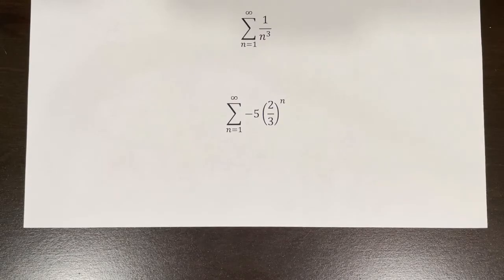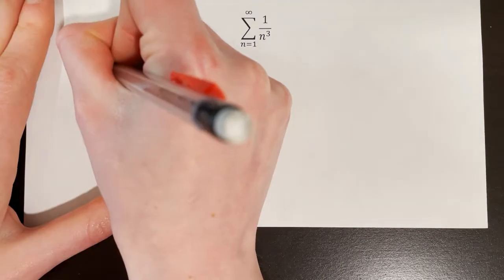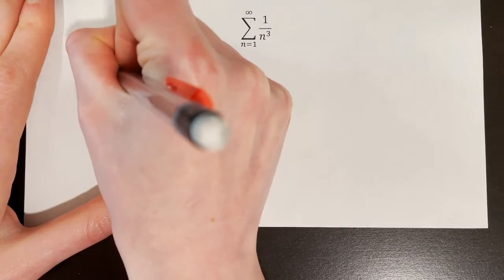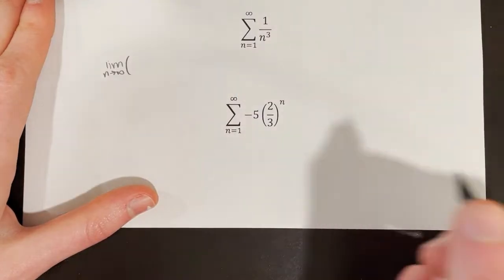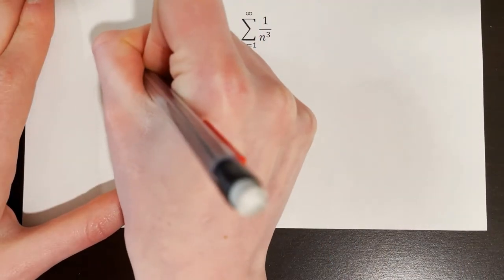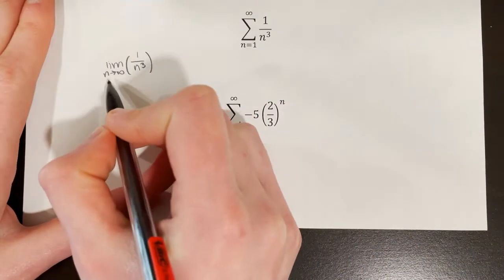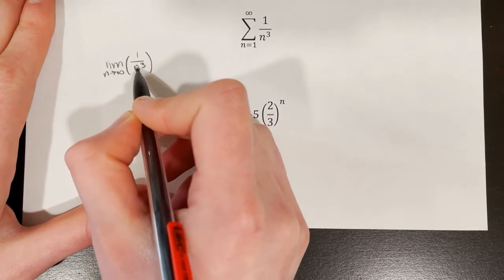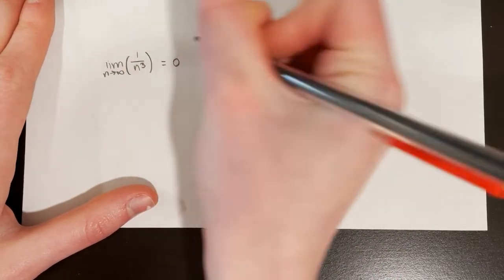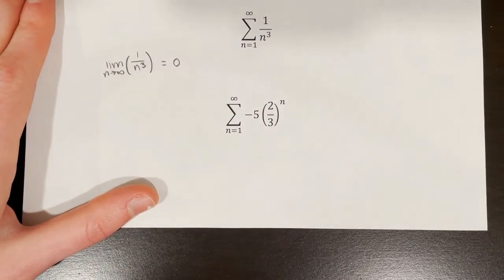Let's try another example: the series from n equals 1 to infinity of 1 over n cubed. We take the limit as n approaches infinity of 1 over n cubed. With a really large number cubed in the denominator, this is equal to 0. Remember, if the limit as n approaches infinity of a sub n is equal to 0, the nth term test is inconclusive.